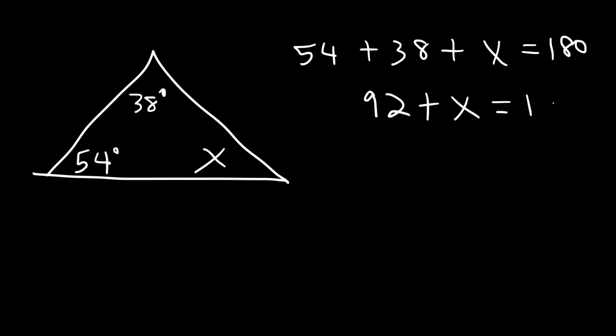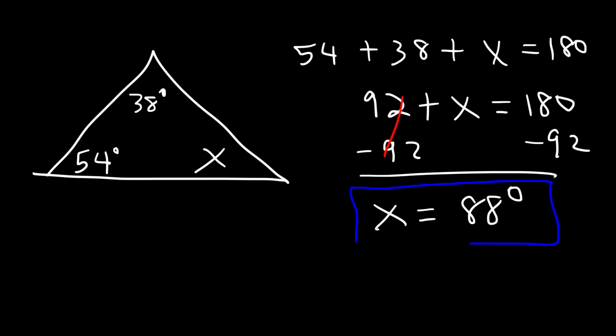So 92 plus x equals 180. To find the value of x, we need to subtract both sides by 92. So x is going to be 180 minus 92, which is 88. So sometimes you may need to find the missing angle. And that's one way in which you can do so.